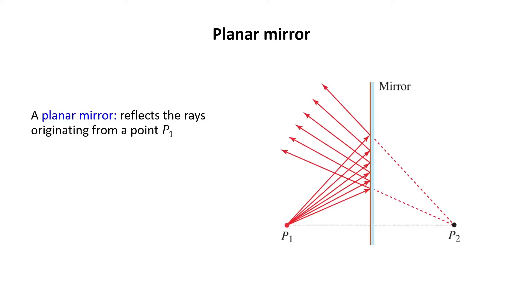Previously, we learned that the angle of incidence equals the angle of reflection. Now, if I continue the reflected rays in the backside of the mirror, which is shown by dashed line, it seems that the rays are coming from a point P2, as you see.